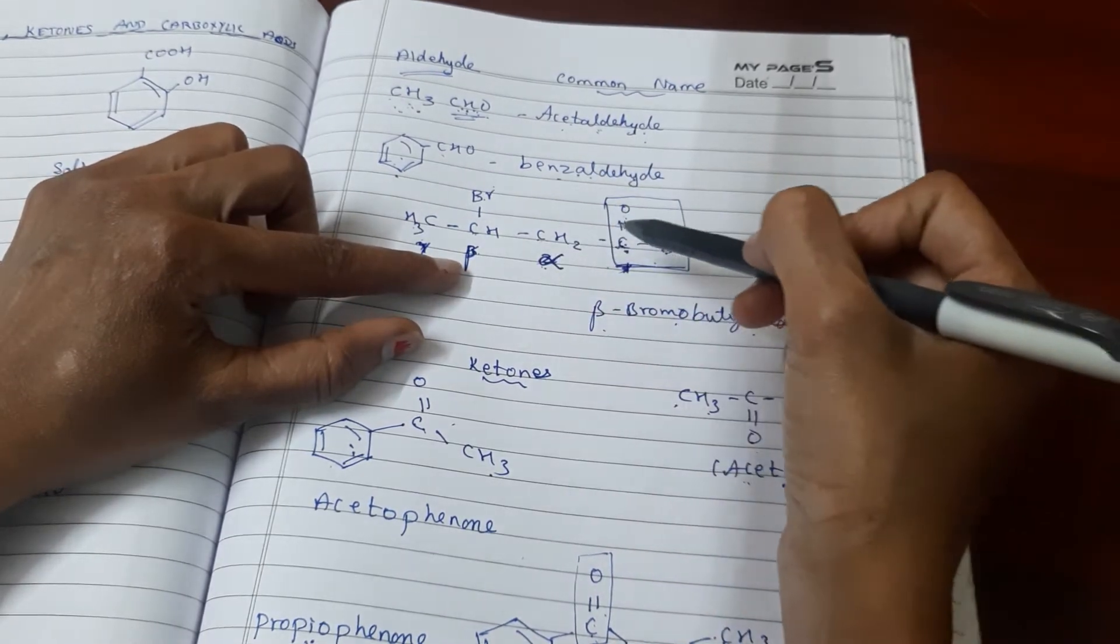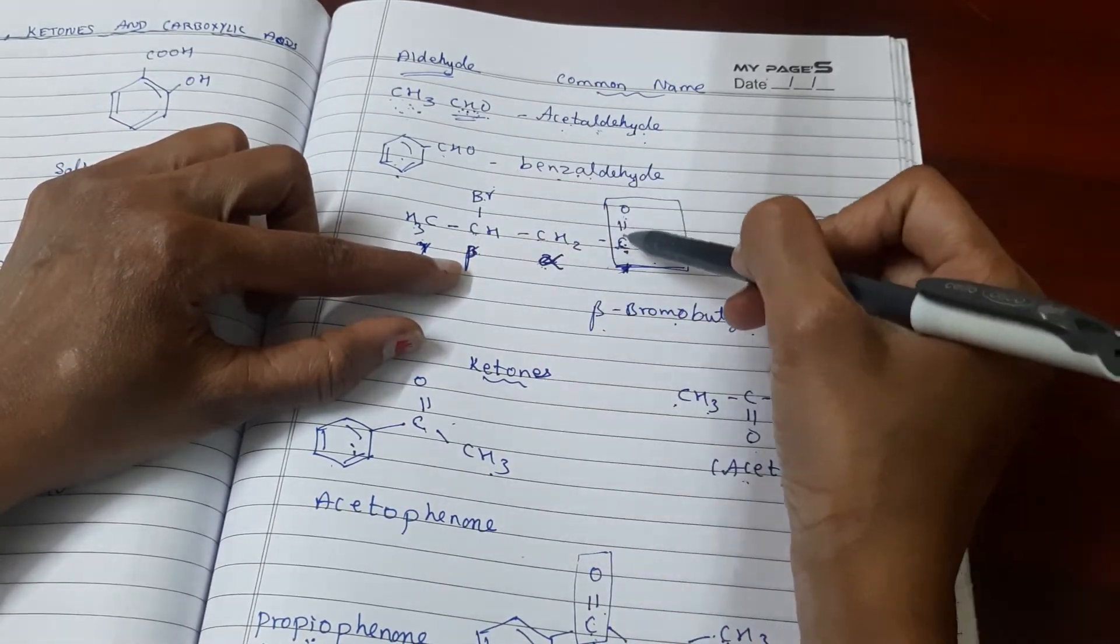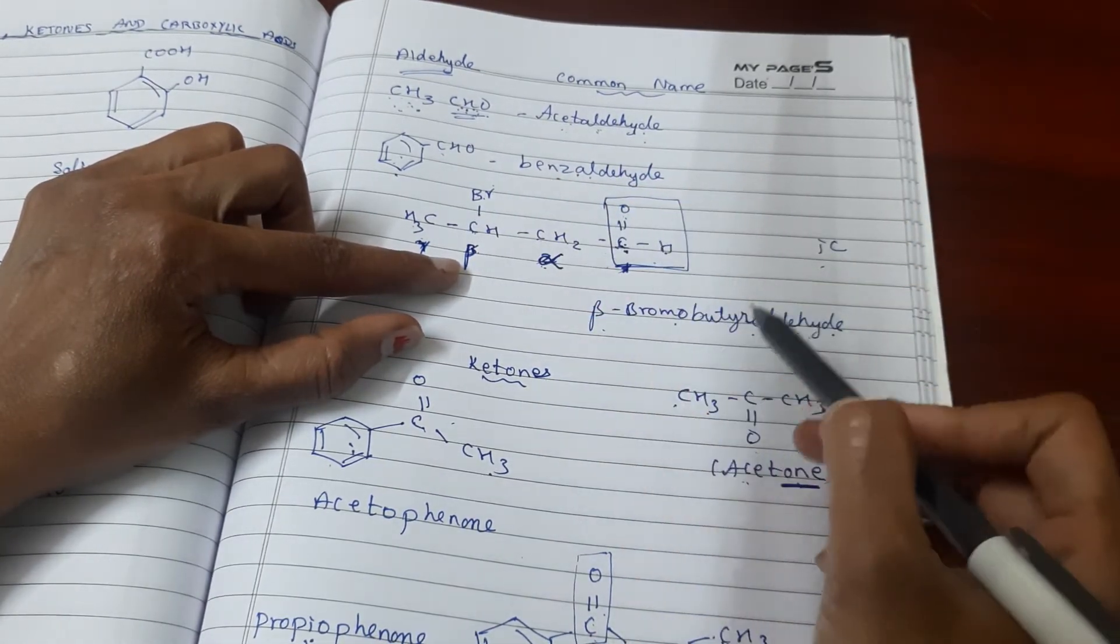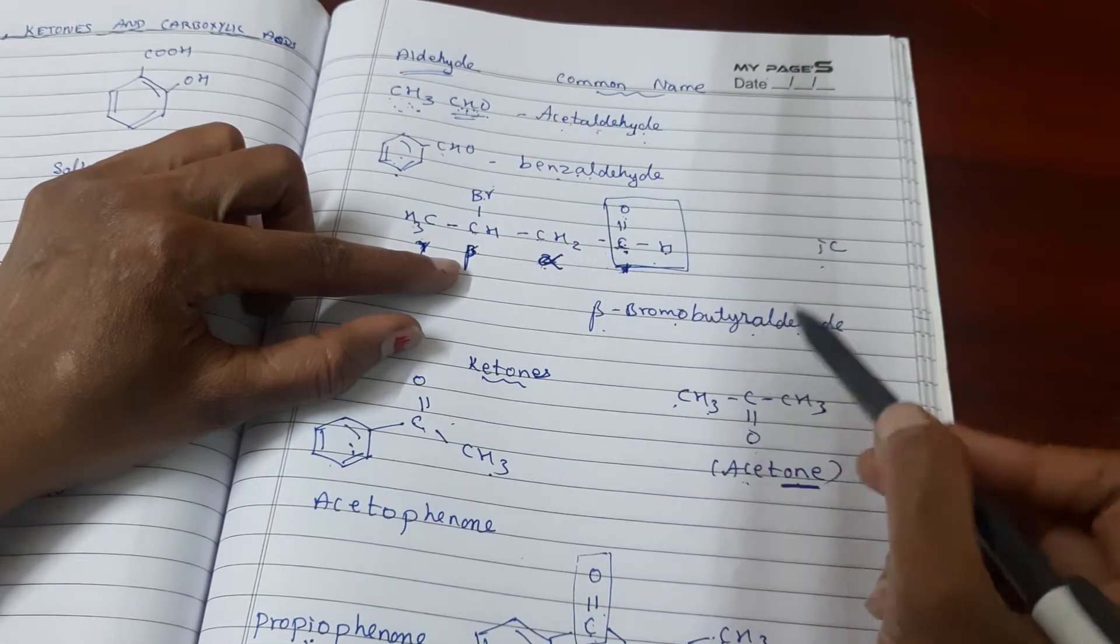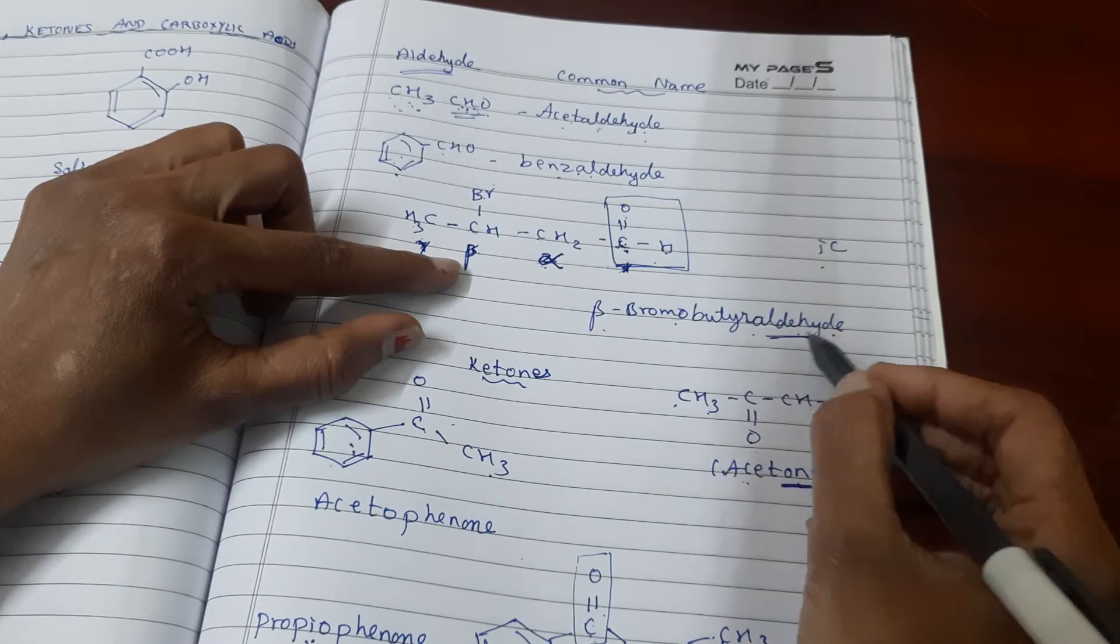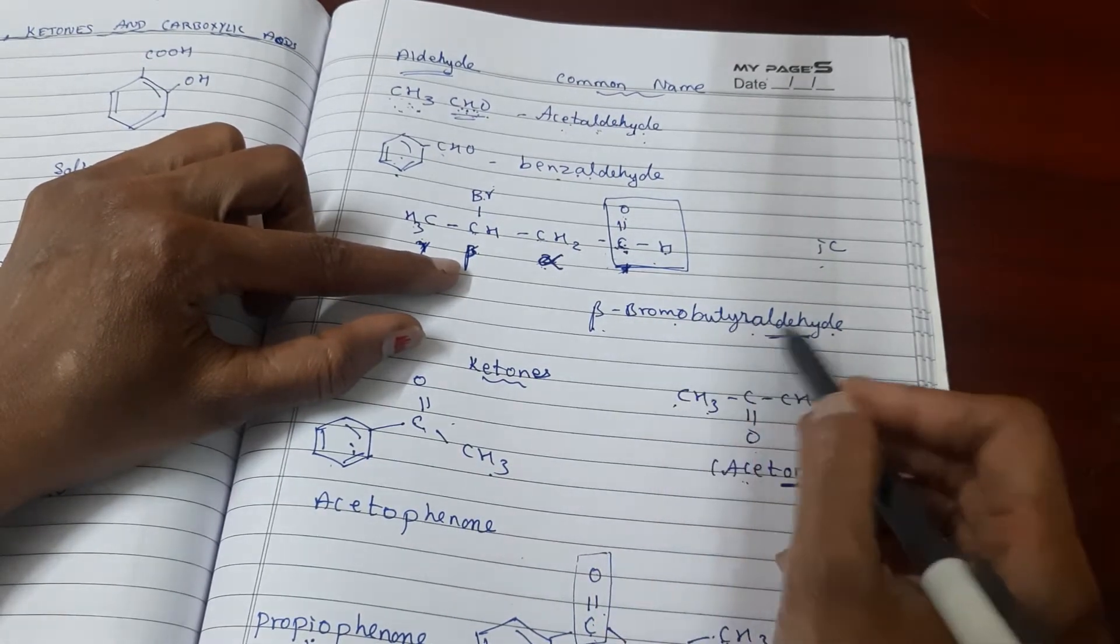Now we count the carbons: 1, 2, 3, 4. Four carbons with the aldehyde functional group is butyraldehyde. With the bromo substituent at the beta position, this is beta-bromobutyraldehyde.